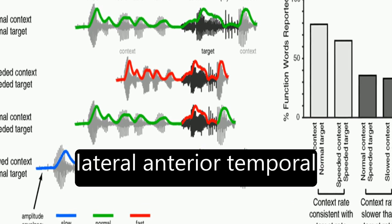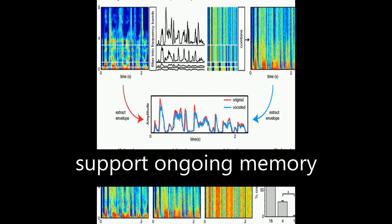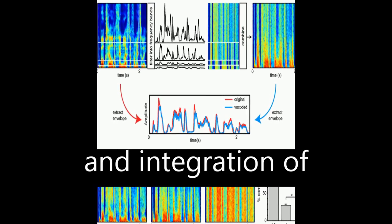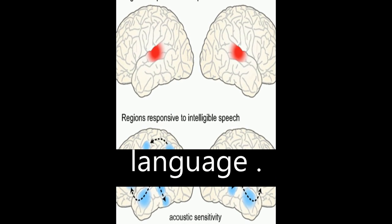It also proposes that lateral anterior temporal cortex functions in a domain-general fashion to support ongoing memory and integration of meaningful input, forming the foundation of a rhythmic hierarchy supporting spoken language.